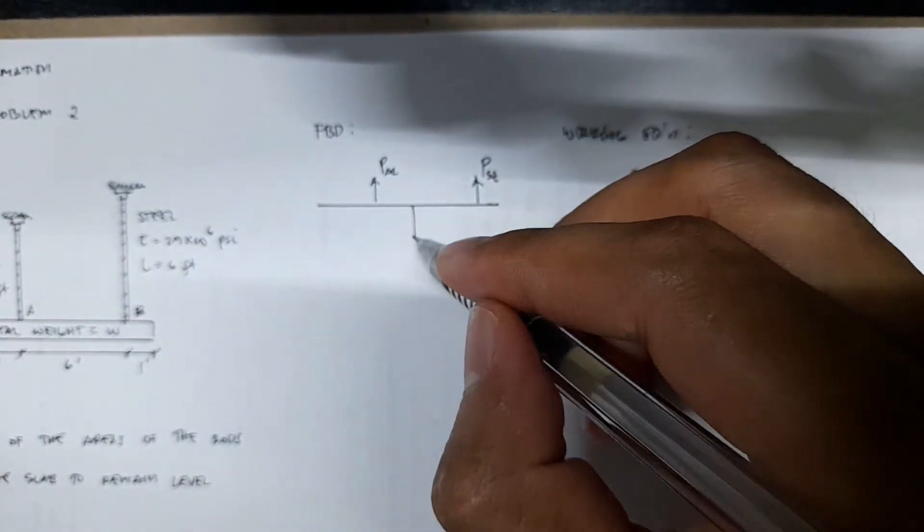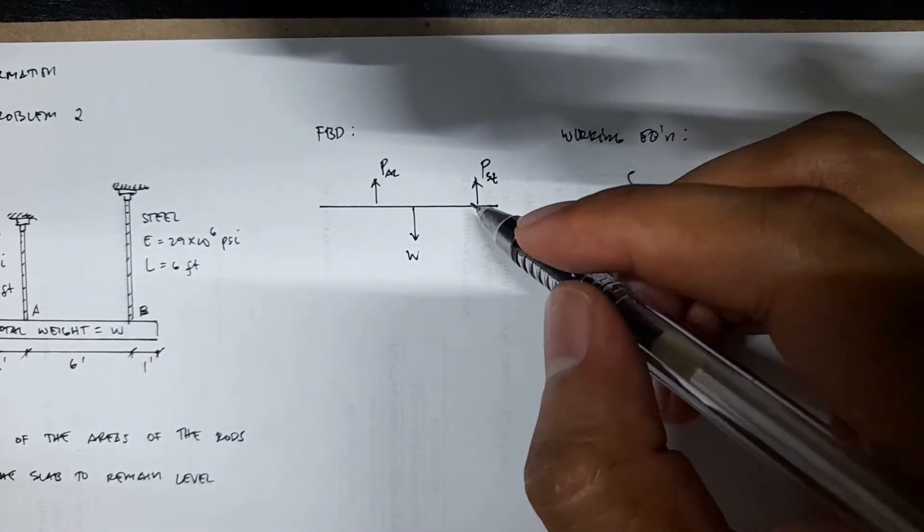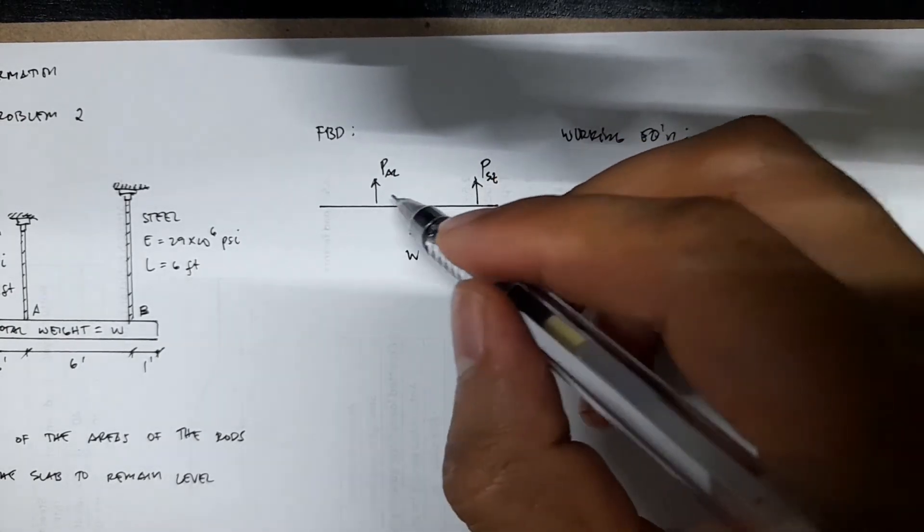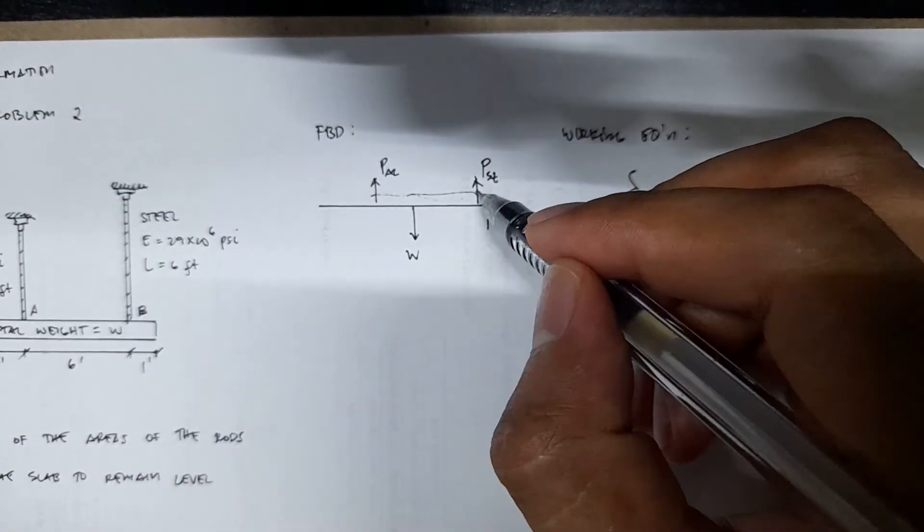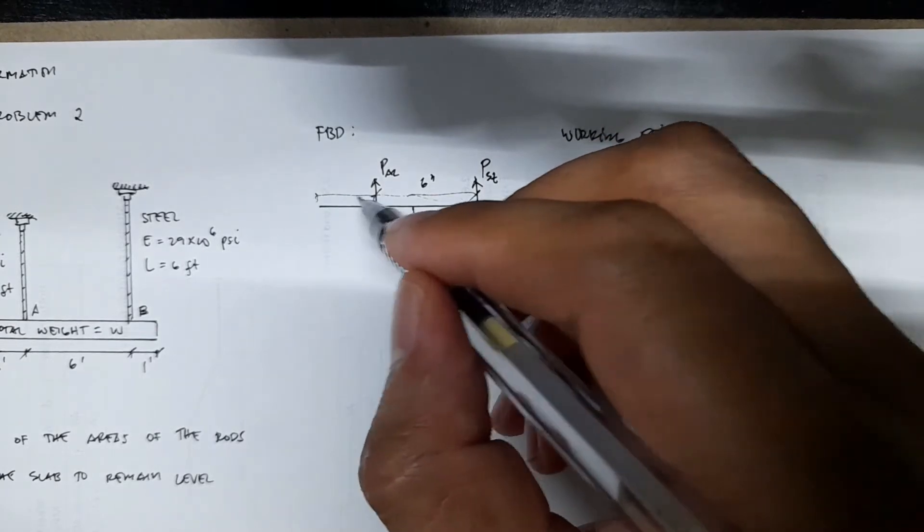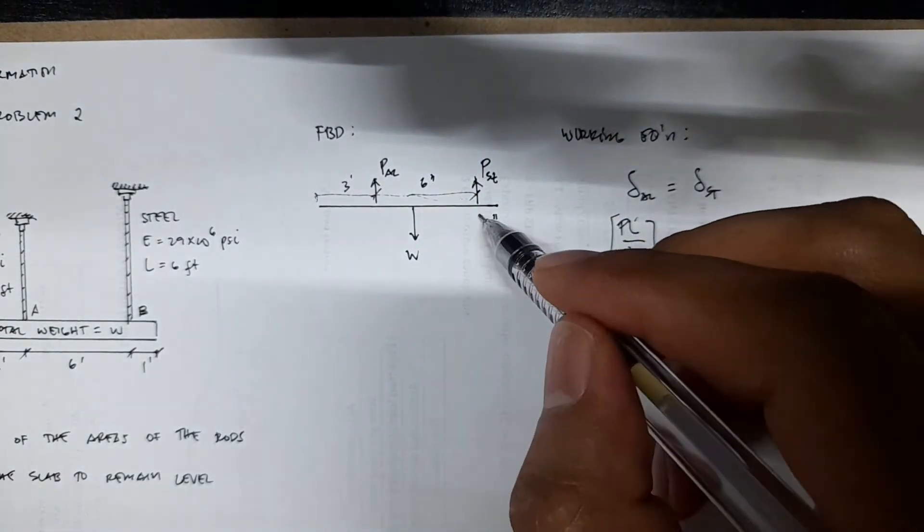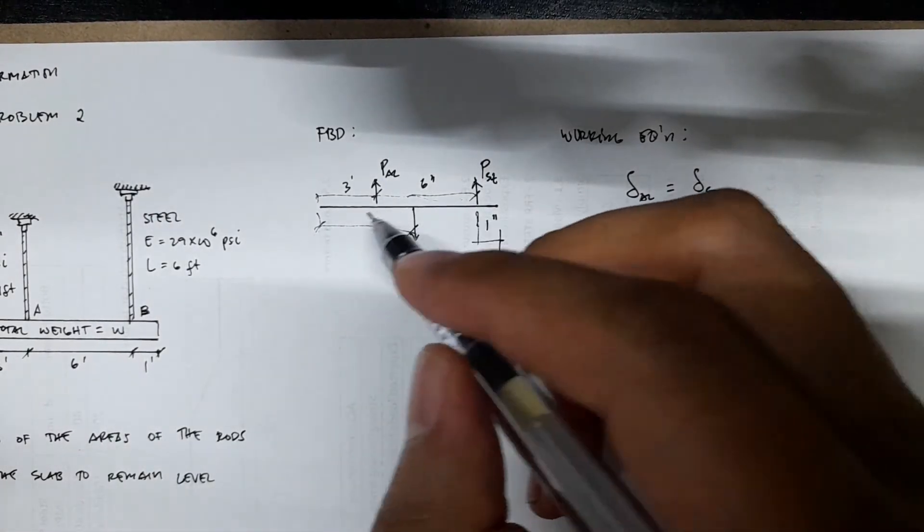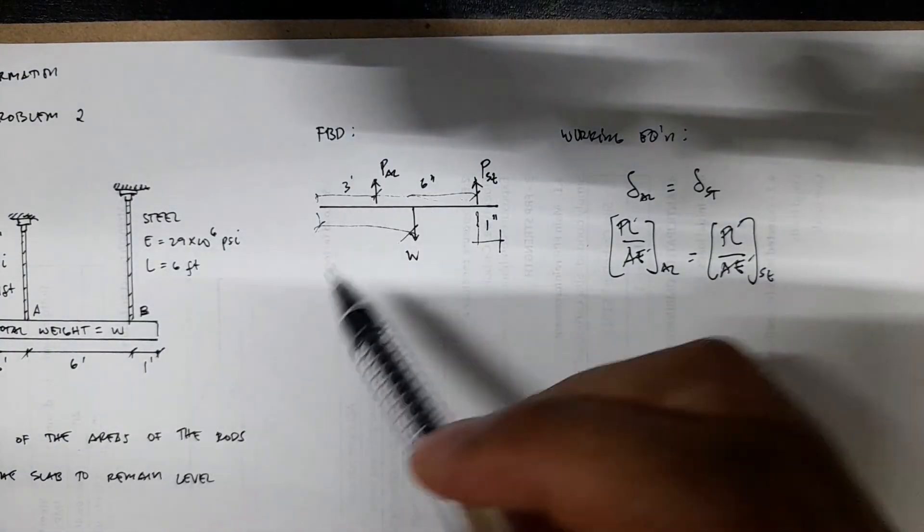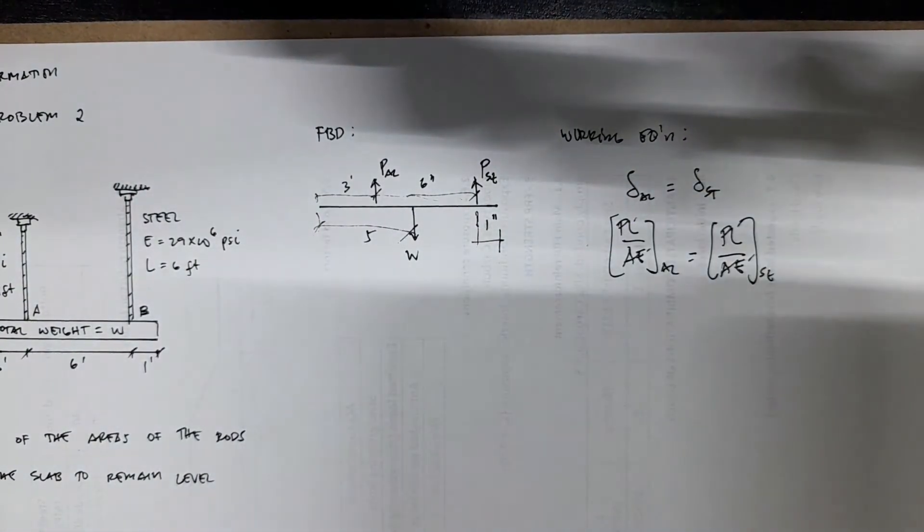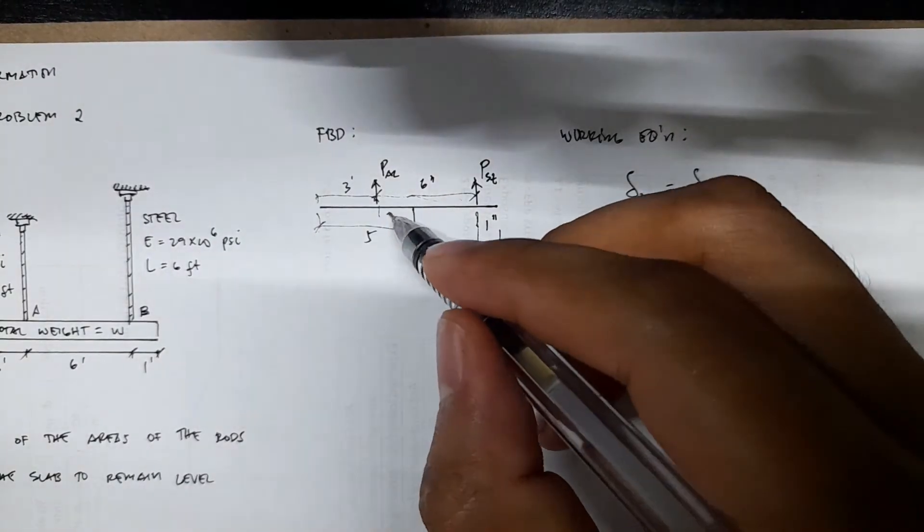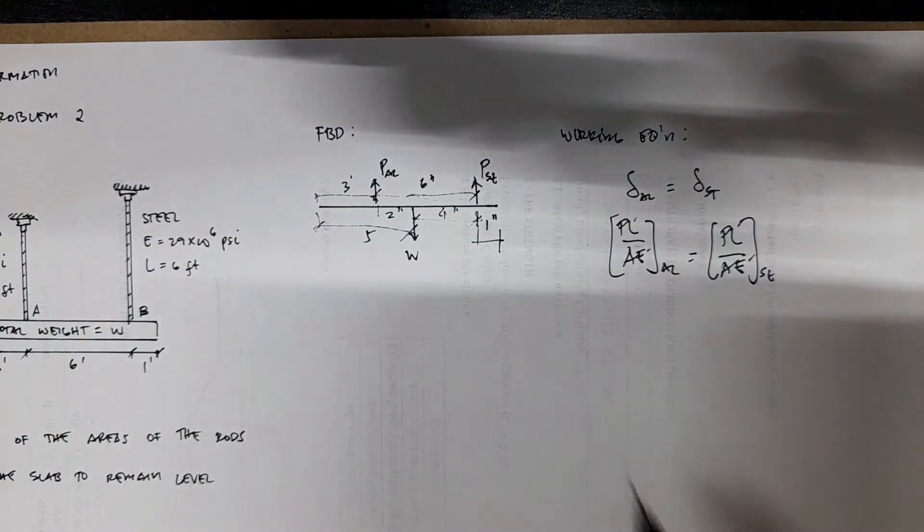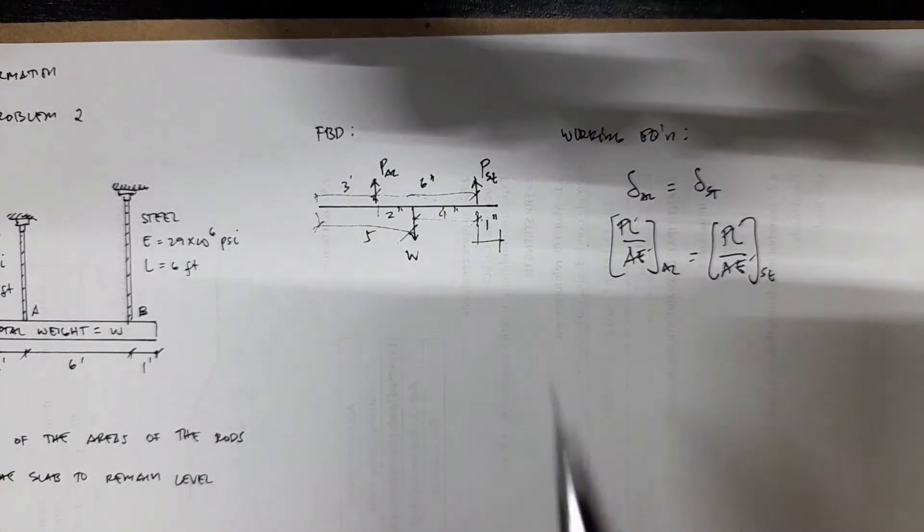And then we have the weight in the middle. This is W. This is 1 inch, this is 6 inches, this one is 3 inches, and then this is 1 inch. This one is 3 plus 6 plus 1, it's 10, this is 5, so this is 2 inches, this one is 4 inches.